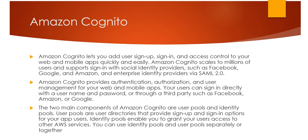To achieve identity federation, Amazon has launched Amazon Cognito. Amazon Cognito lets you add user sign-up, sign-in, and access control to your web and mobile apps quickly and easily. Amazon Cognito scales to millions of users and supports sign-in with social identity providers such as Facebook, Google, and Amazon, and enterprise identity providers via SAML 2.0. Amazon Cognito provides authentication, authorization, and user management for web and mobile apps. Your users can sign in directly with a username and password or through a third party such as Facebook, Amazon, or Google.